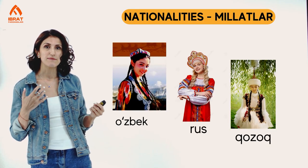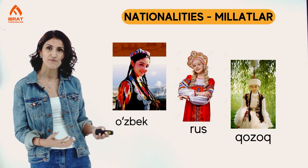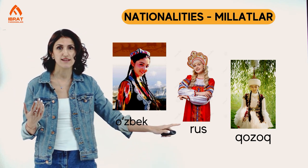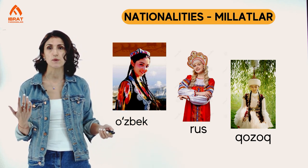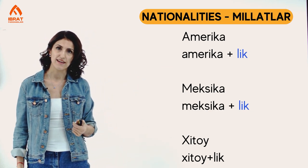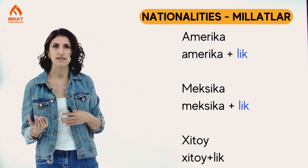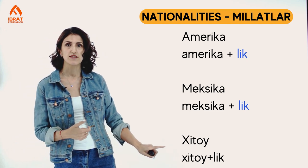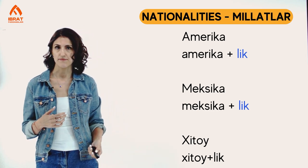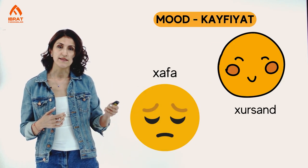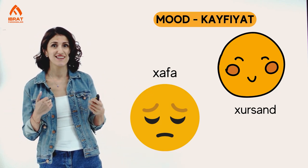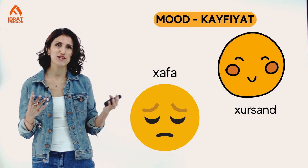We'll also need some descriptions of nationalities: Uzbek, Rus, Kozok which is Kazakh. And sometimes when we can't define nationality with one word, we just add the -lik ending: Amerikalik, Mexicalik, Khtoylik — Khtoy is China. We also have two more words: khafa which means sad, and khursant which means glad.